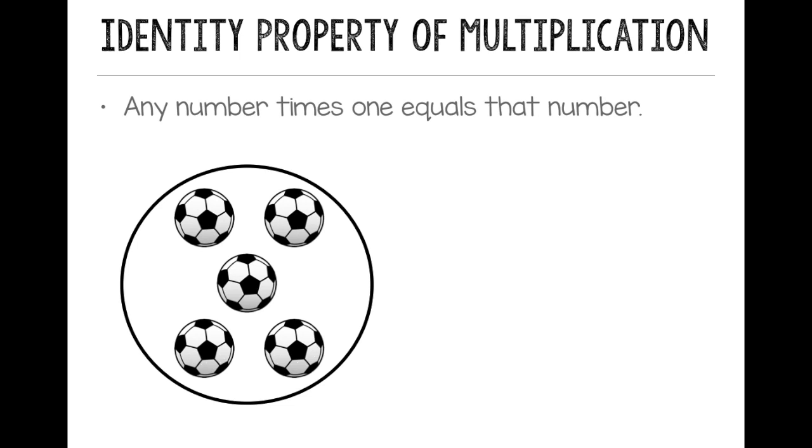So if we have one group of 5 soccer balls, that's one group of 5, or 1 times 5 equals 5. So my one factor is a 1, my other factor is a 5. And because I'm multiplying times 1, my product is going to be the other number, or 5.